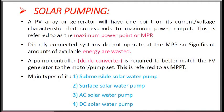Main types of solar pumping: First is submersible solar water pump. Second is surface solar water pump. Third is AC solar water pump. Fourth is DC solar water pump. Submersible solar water pumps are used for borewell systems where the head height is large, and surface solar water pumps are used at surface or ground level for no or very little head. AC solar water pumps utilize the induction machine and DC solar water pumps utilize the permanent magnet DC motor.